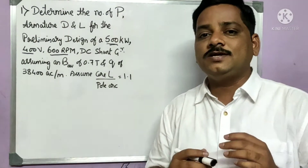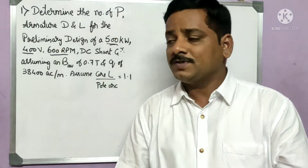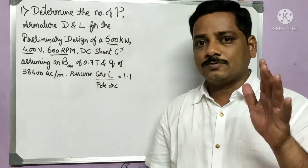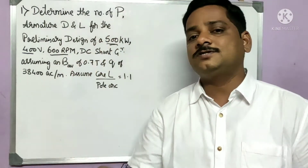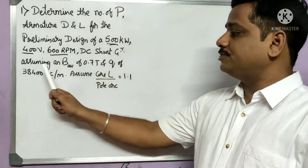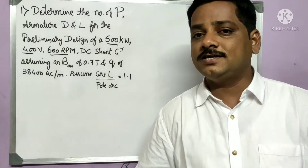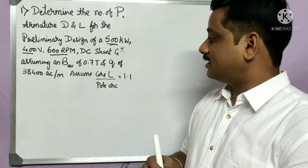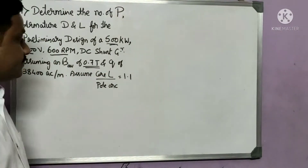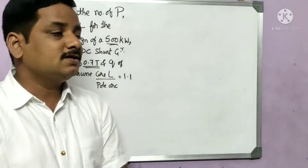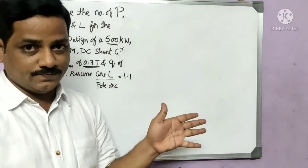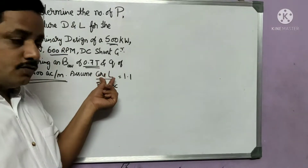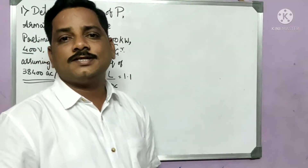We need to find the main dimensions D and L as well as the number of poles. Additional information given: B_av, the average flux density in the air gap between stator and rotor, is 0.7 tesla. Q, the specific electrical loading, is 38,400 ampere conductors per meter. The length of core divided by pole arc is 1.1.